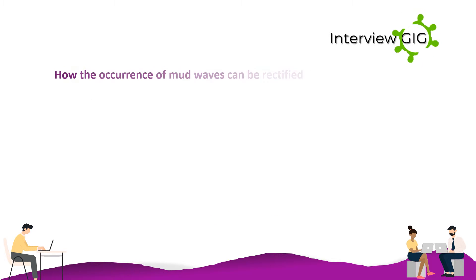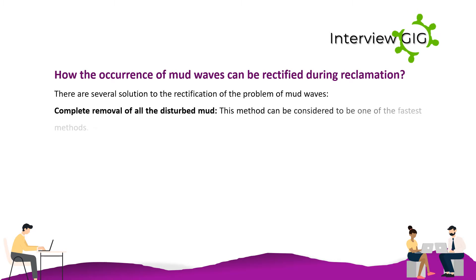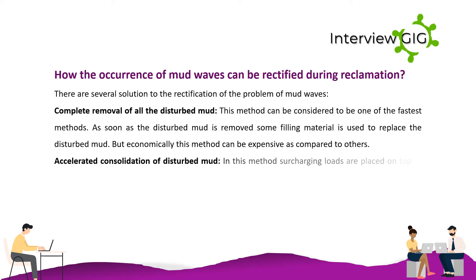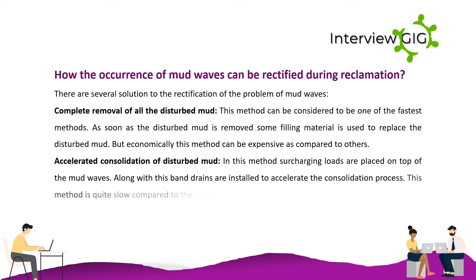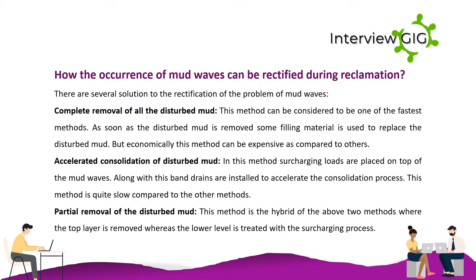How can the occurrence of mud waves be rectified during reclamation? There are several solutions. First, complete removal of all the disturbed mud — one of the fastest methods, where filling material replaces the disturbed mud, though it can be economically expensive. Second, accelerated consolidation of disturbed mud, where surcharging loads are placed on top of the mud waves and band drains are installed to accelerate consolidation — this method is quite slow. Third, partial removal of the disturbed mud, a hybrid method where the top layer is removed and the lower level is treated with the surcharging process.